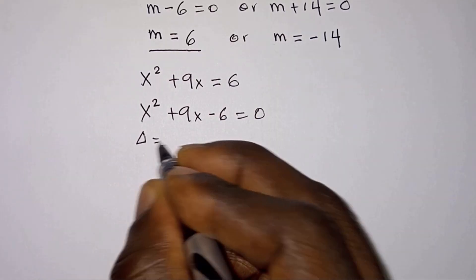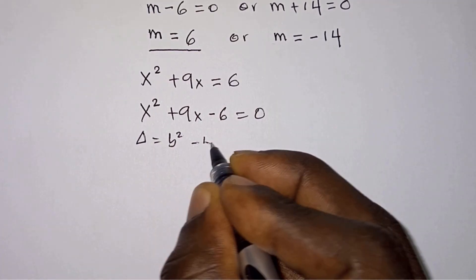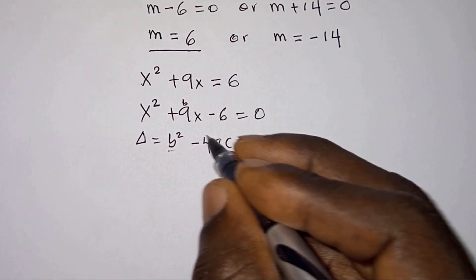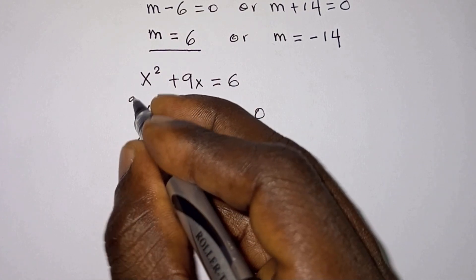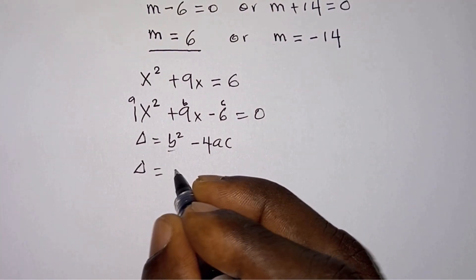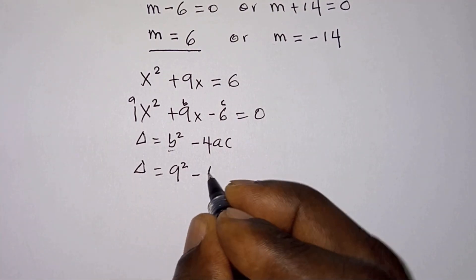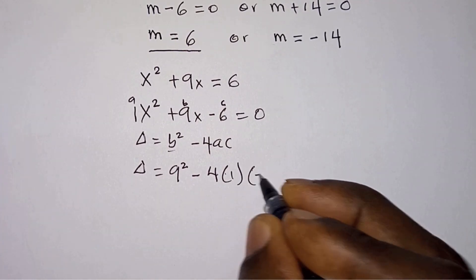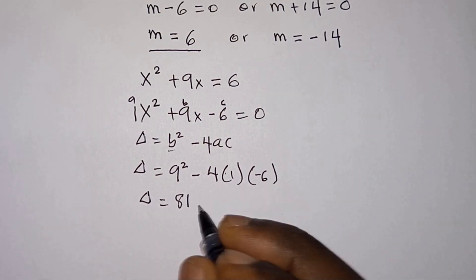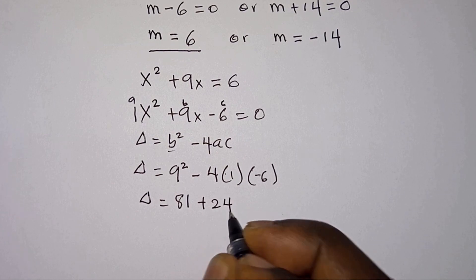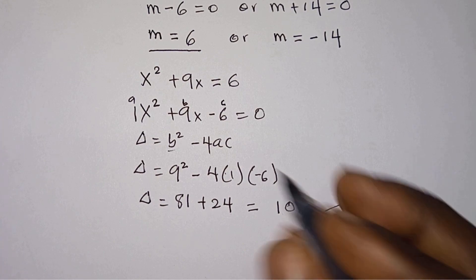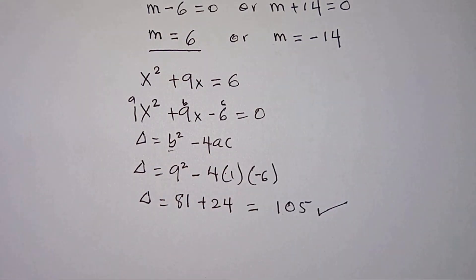The discriminant is delta equals b squared minus 4ac, where b is the coefficient of x which is 9, a is the coefficient of x squared which is 1, and c is the constant negative 6. So delta equals 9 squared minus 4 times 1 times negative 6, giving 81 plus 24, so delta equals 105. Since this is positive, the quadratic has real roots.